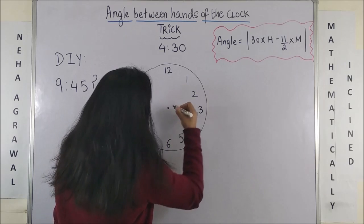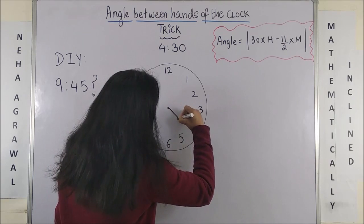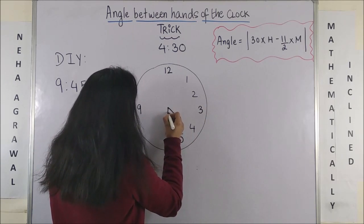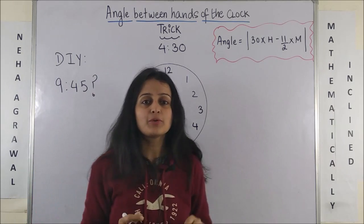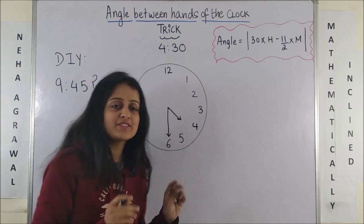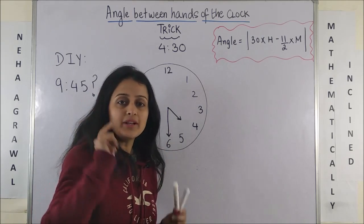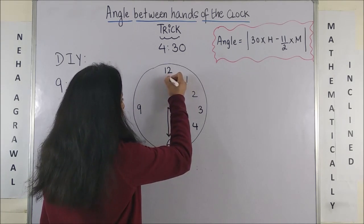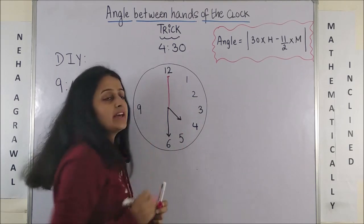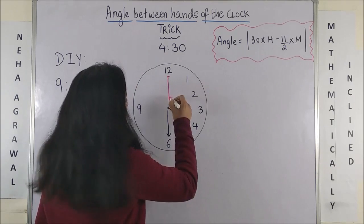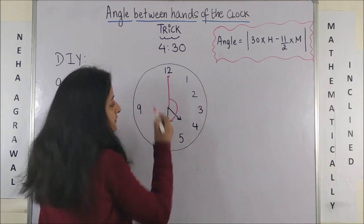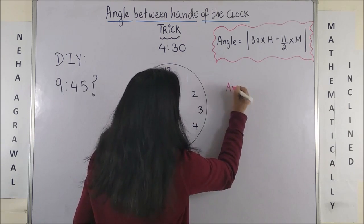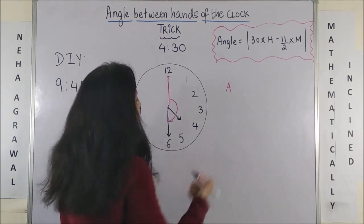So 4:30 means technically this is the hour hand and this is the minute hand. Obviously, your hour hand is also going to be between 4 and 5 somewhere. Now, I have taken one reference point which is 12. So first of all exploring the simpler part, the minute hand. Let's say this is the angle which I call as A.